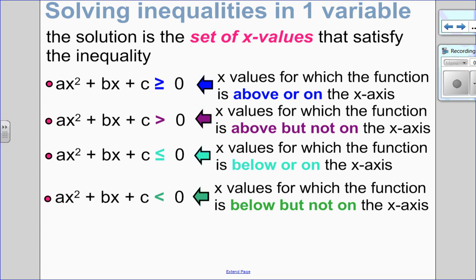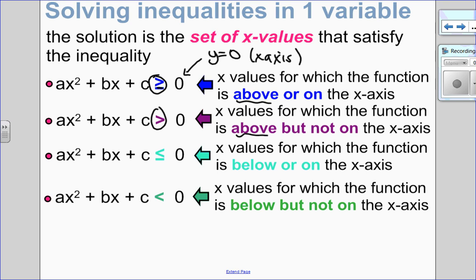There are four types: ax squared plus bx plus c compared to zero. We've essentially set y equal to zero, which is the x-axis. Greater than or equal to means above or on the x-axis; greater than alone means above but not on. Less than or equal to means below or on the x-axis; less than alone means below but not on the x-axis.